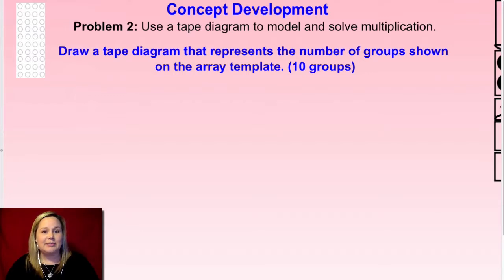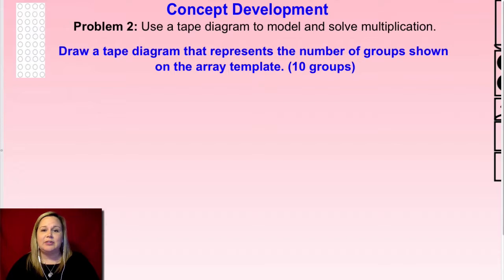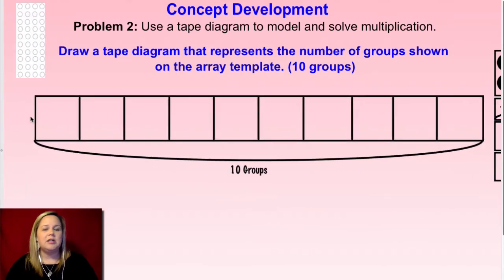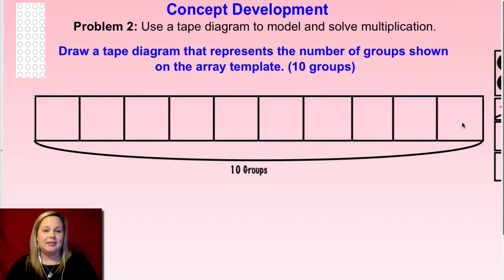Now we're going to use a tape diagram. I'd like for you to draw the tape diagram that represents the number of groups shown on the array template — remember there are ten groups — so go ahead and draw a tape diagram that represents the ten groups. Draw it as a rectangle; it doesn't have to be perfect, just try to get it close to being even with each one of those groups. If you need more time pause the video. So here's what I came up with: I divided my whole rectangle into ten equal parts, as close to equal as I could.